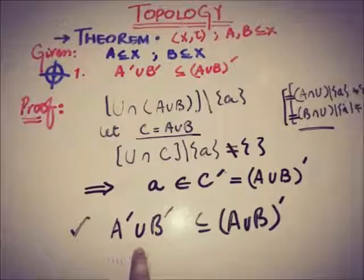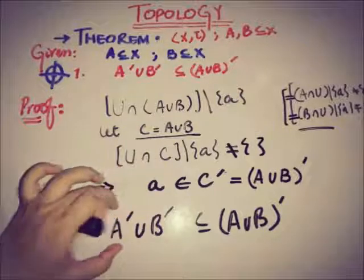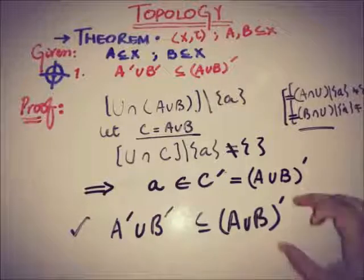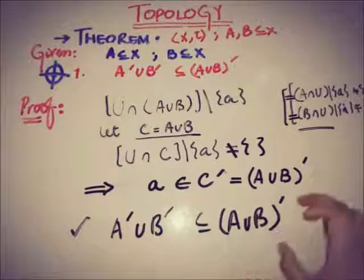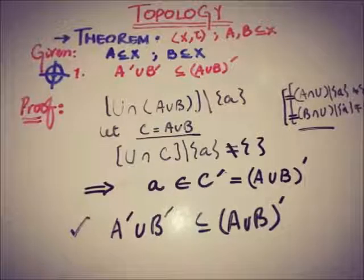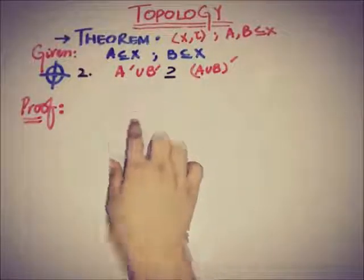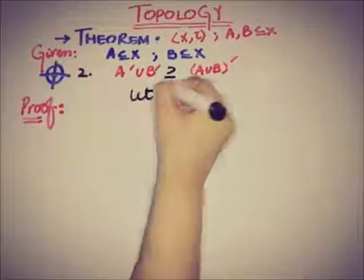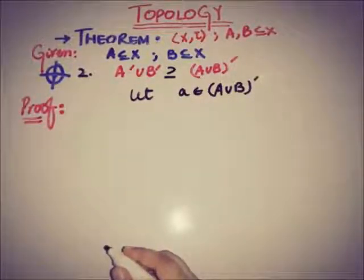We have proved the first part: A'∪B' ⊆ (A∪B)'. Now moving to the second part, we must prove that (A∪B)' ⊆ A'∪B'. We pick a random element a belonging to (A∪B)'.